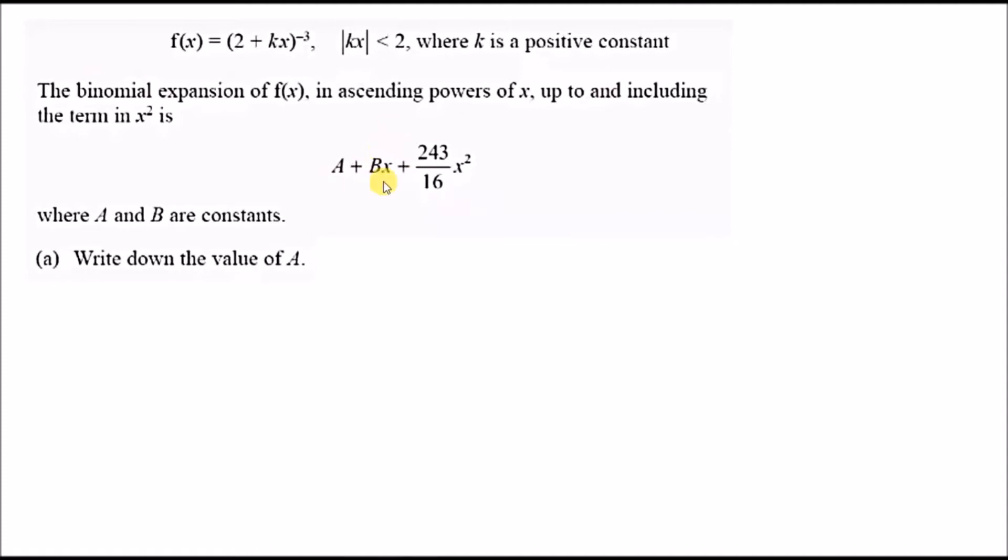The key idea is that this is just an expansion of the first term, so we can find coefficients by matching. First, let's recall the binomial expansion formula. The general formula is (1 + ax)^n equals 1 plus n times ax, plus n(n-1)/2! times (ax)^2, and so on.